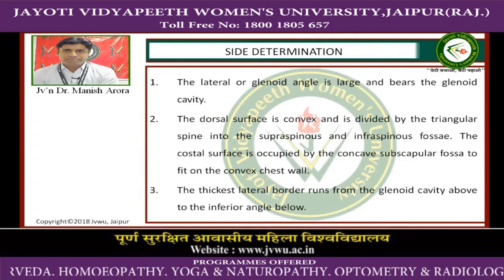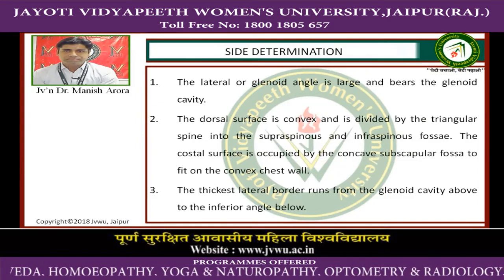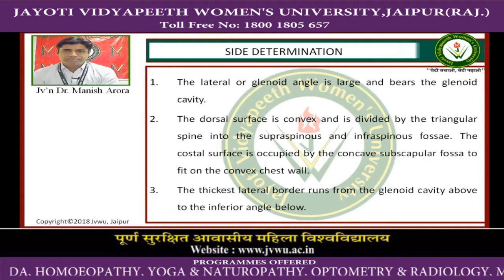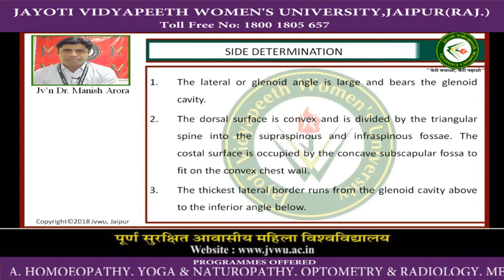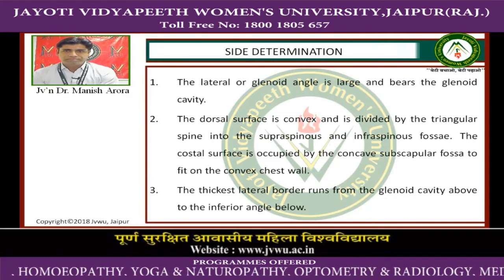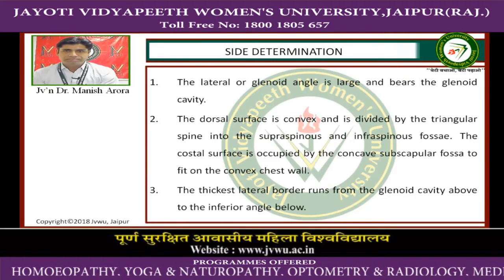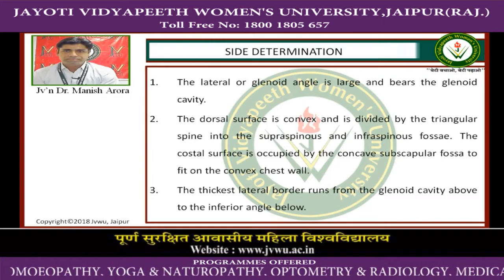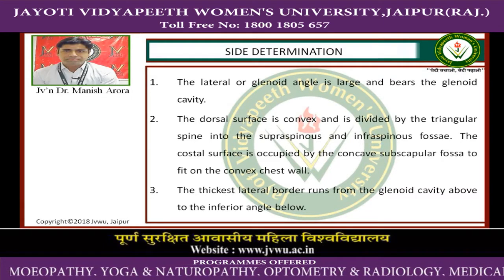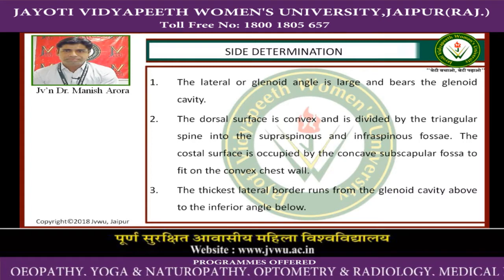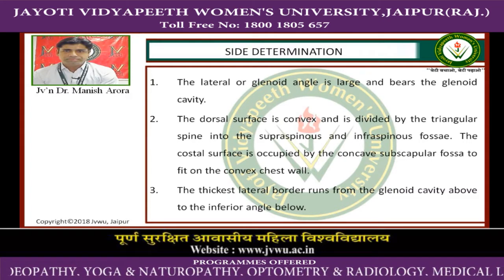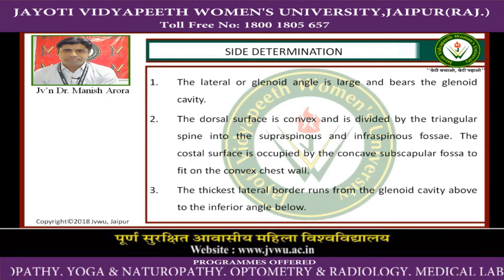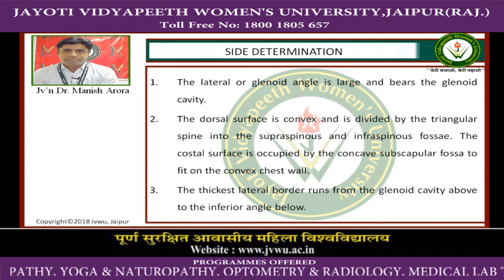Side Determination: 1. The lateral or glenoid angle is large and bears the glenoid cavity. 2. The dorsal surface is convex and is divided by the triangular spine into the supraspinous and infraspinous fossae. 3. The costal surface is occupied by the concave subscapular fossa to fit on the convex chest wall. 4. The thickest lateral wall runs from the glenoid cavity above to the inferior angle below.